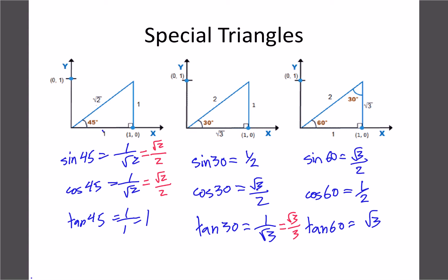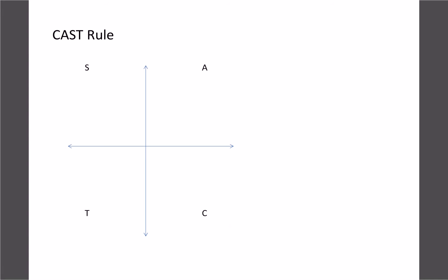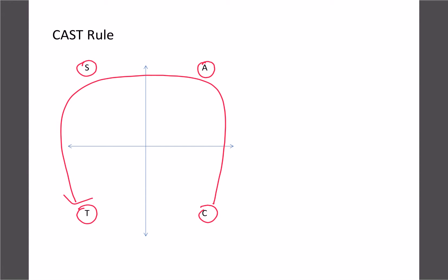For any reference angle of 30, 45, or 60 degrees, we know the sine, cos, and tan values — we don't need to calculate them. The only thing that changes is the sign, depending on the quadrant. We use the CAST rule: starting in the bottom-right corner and going counterclockwise, C means cosine is positive in quadrant 4, A means all are positive in quadrant 1, S means only sine is positive in quadrant 2, and T means only tangent is positive in quadrant 3.